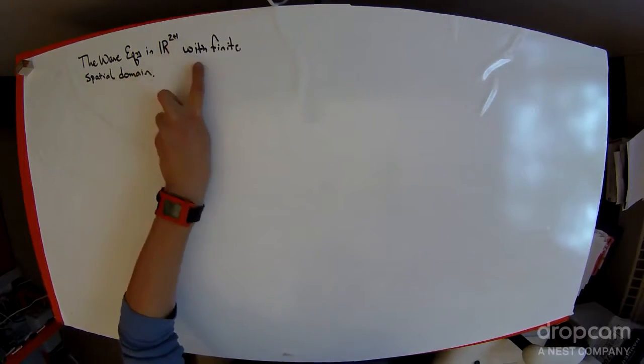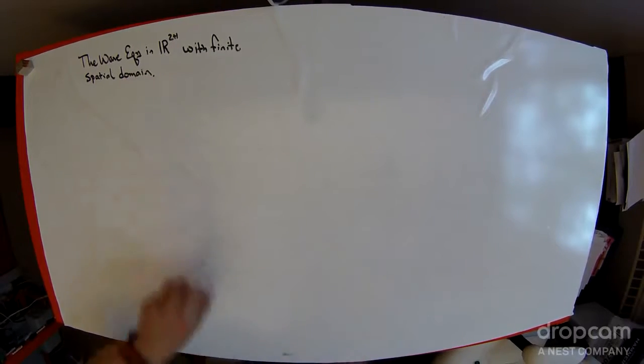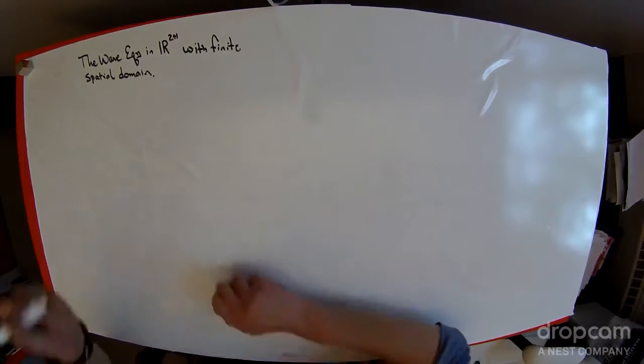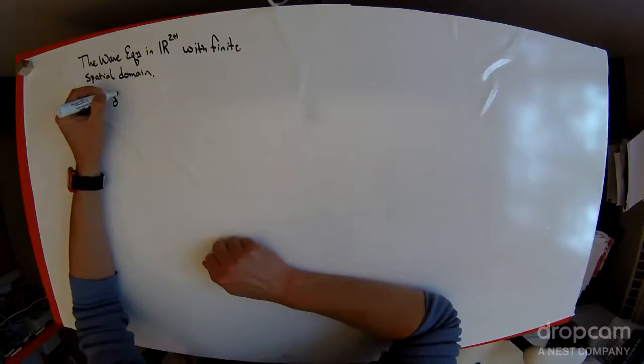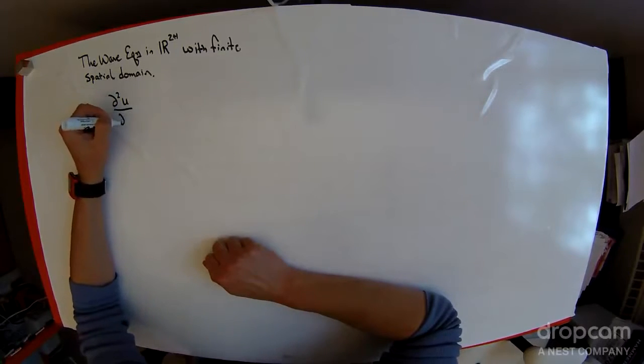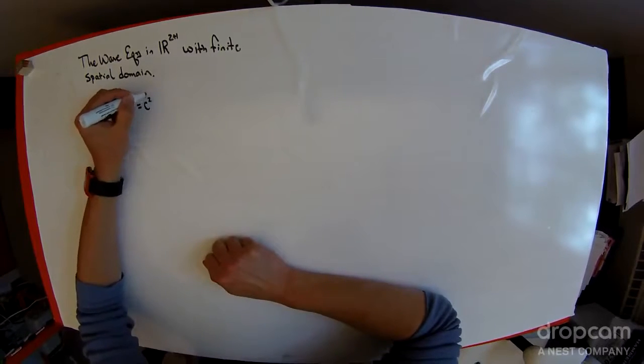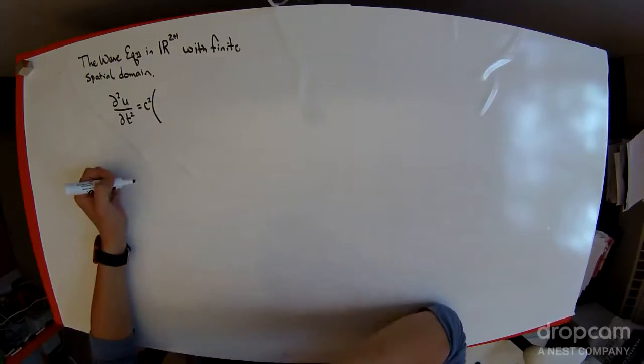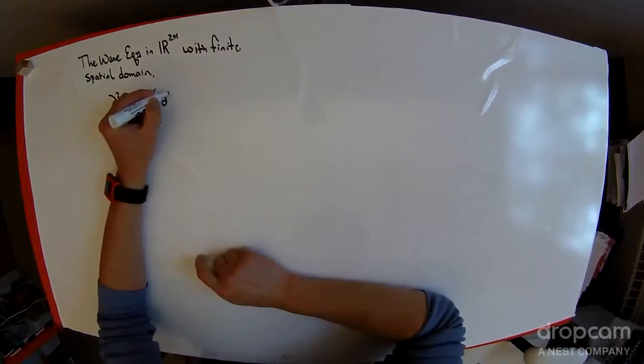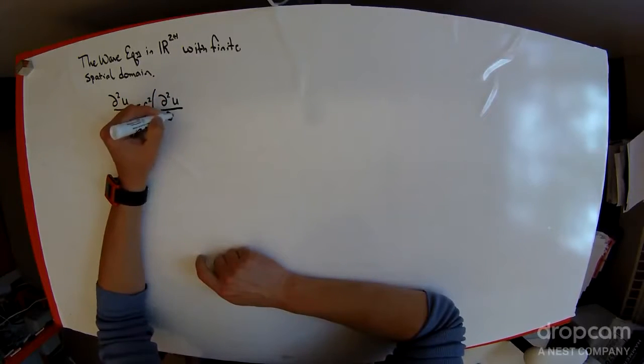What I'd like to quickly talk about here is the wave equation R2+1 with finite spatial domain. So the wave equation in R2+1 looks like the wave equation in one spatial dimension and one temporal dimension, and so that would look something like this.